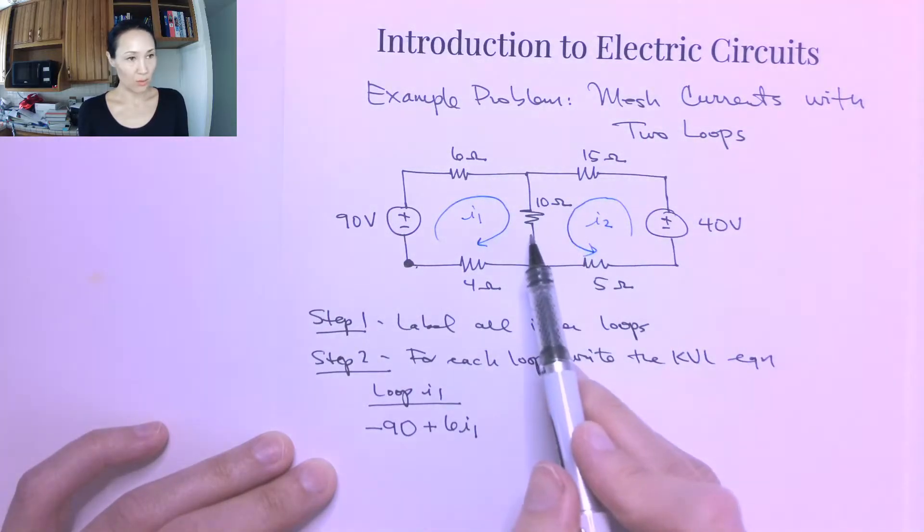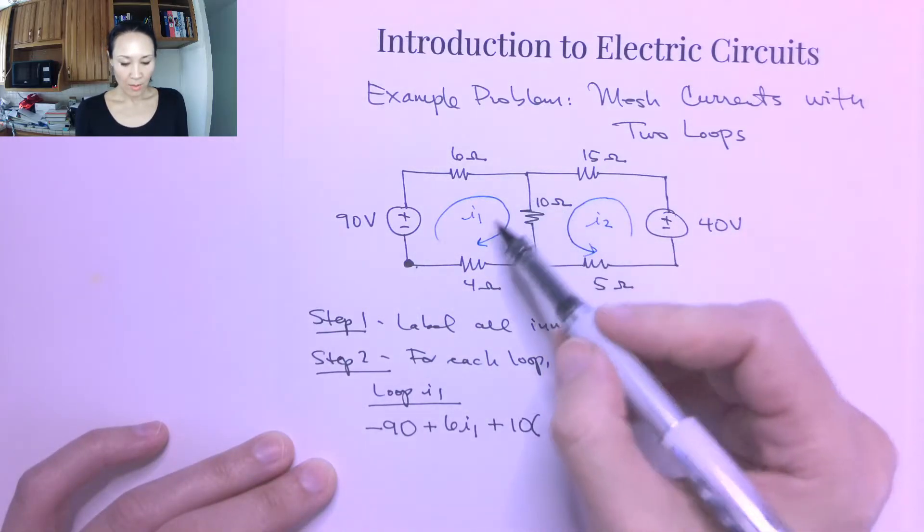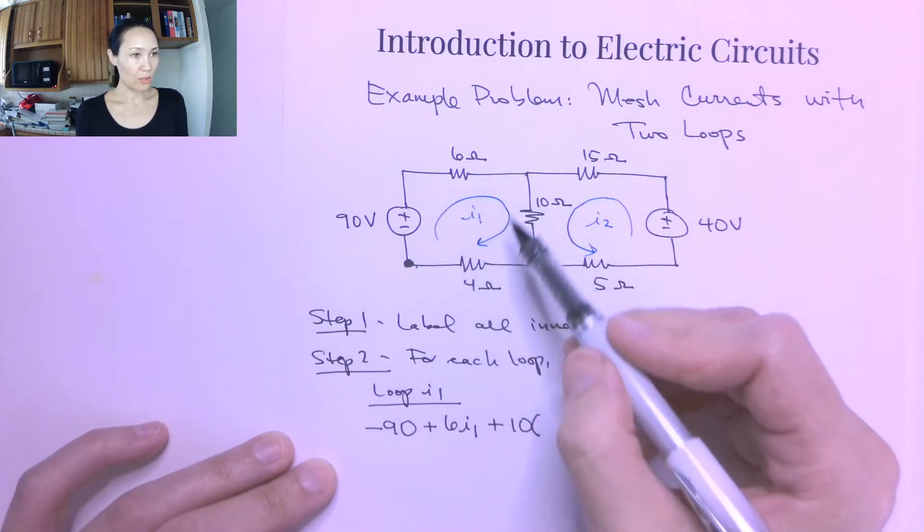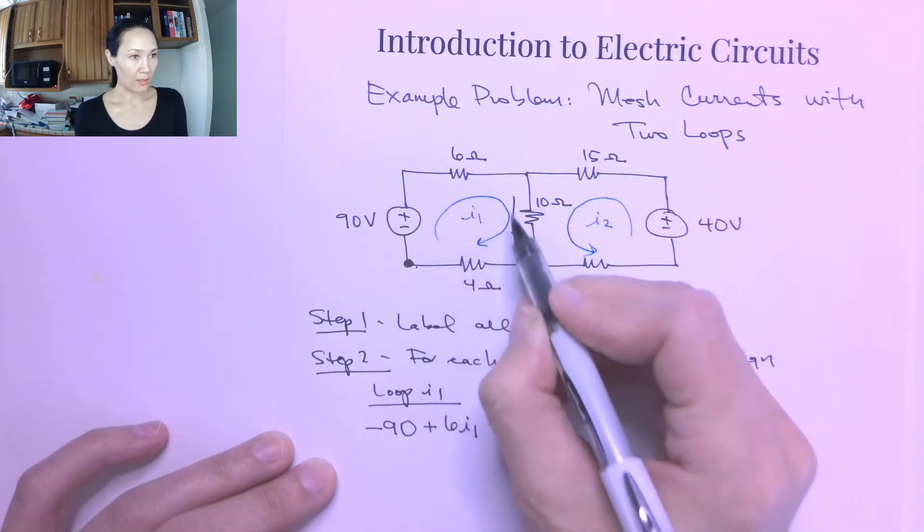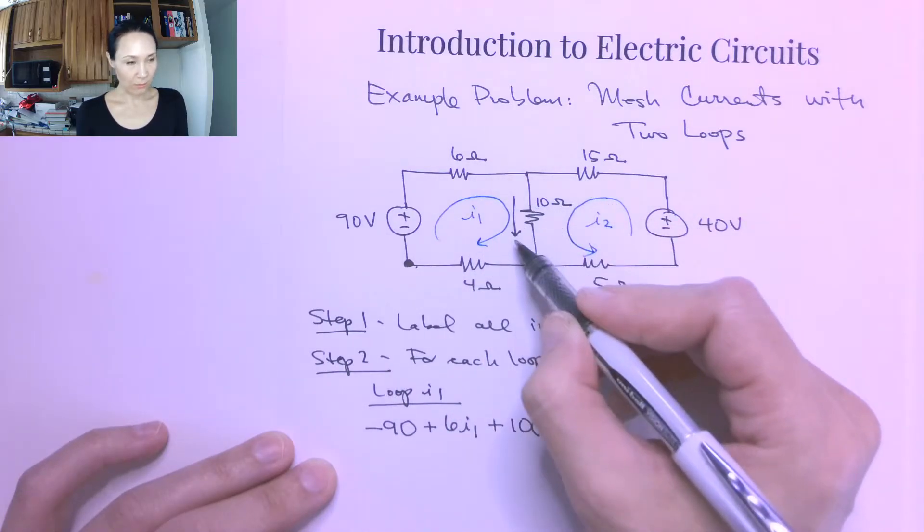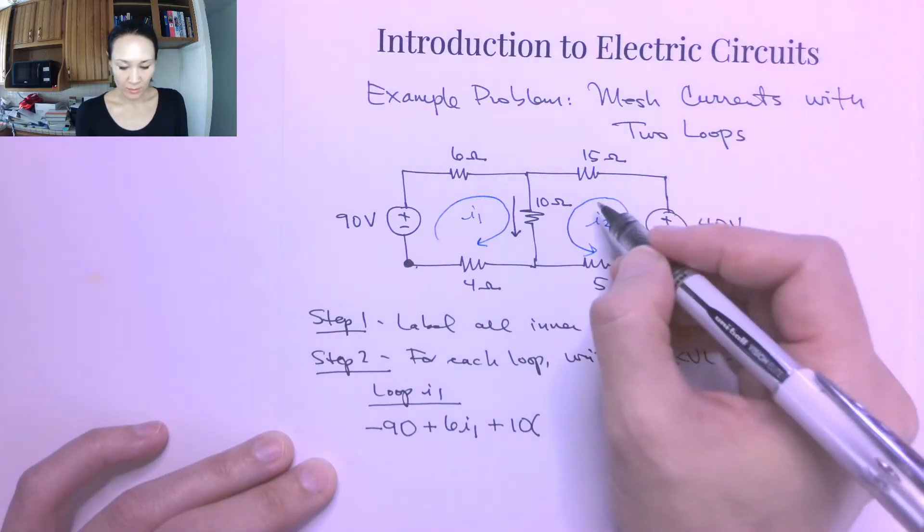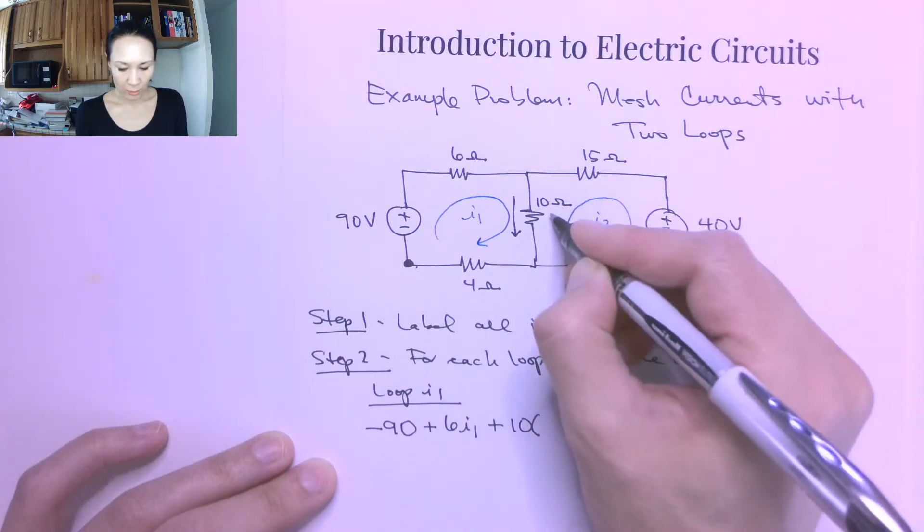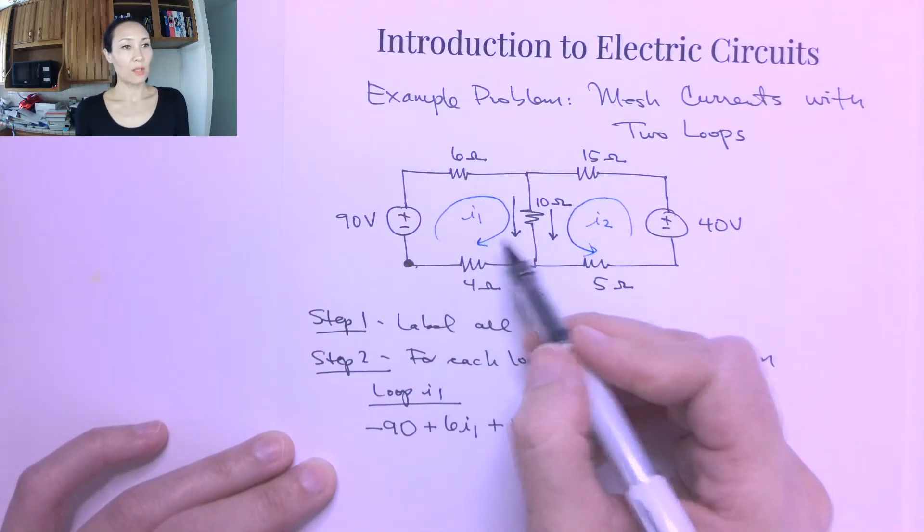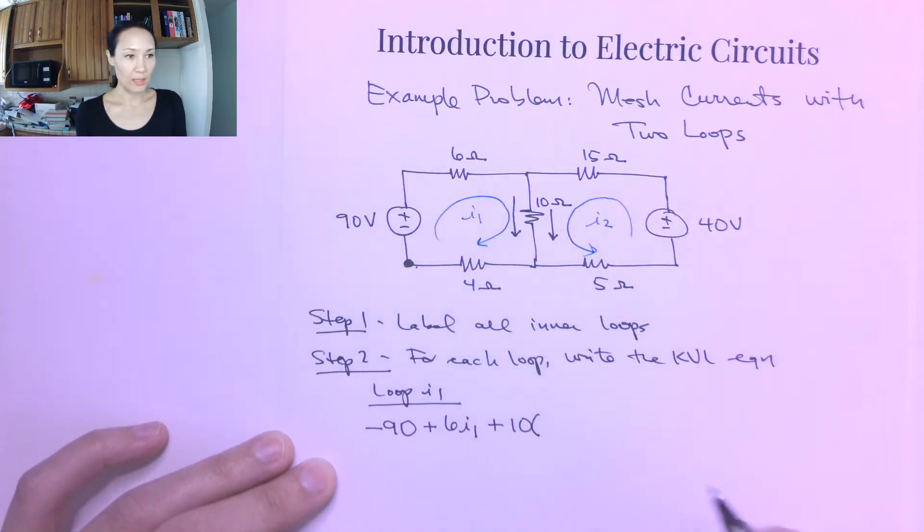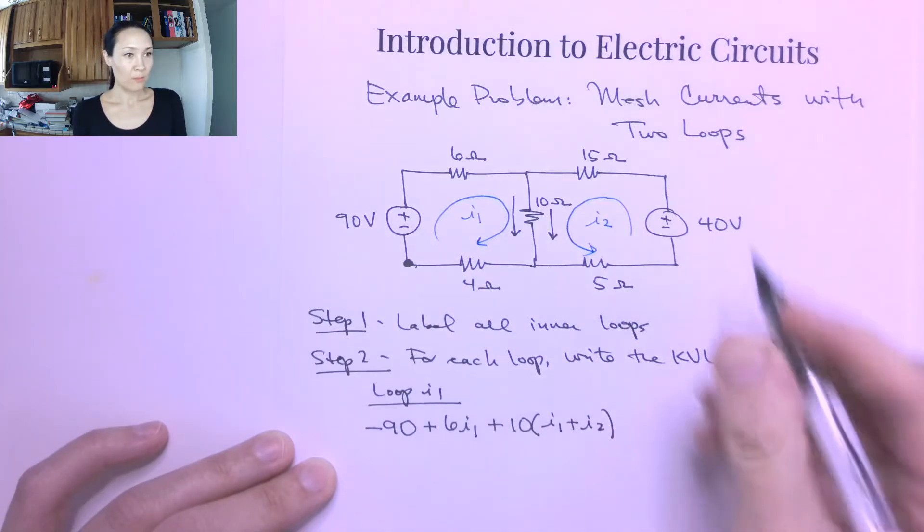As I continue down, now the next circuit element I'm going to encounter is this 10 ohm resistor. So this is going to be 10 times. Now on the left-hand side, I'm currently doing this I1 current. I1 is going in this direction, right, because I'm going around in a loop. But at the 10 ohm resistor, I'm going down. Now the I2 current is also touching this 10 ohm resistor, but because of the direction of this loop, at this resistor, I2 is also going down. So these two currents are going to mesh, and since they're in the same direction, they're going to add. So this is going to be I1 plus I2.